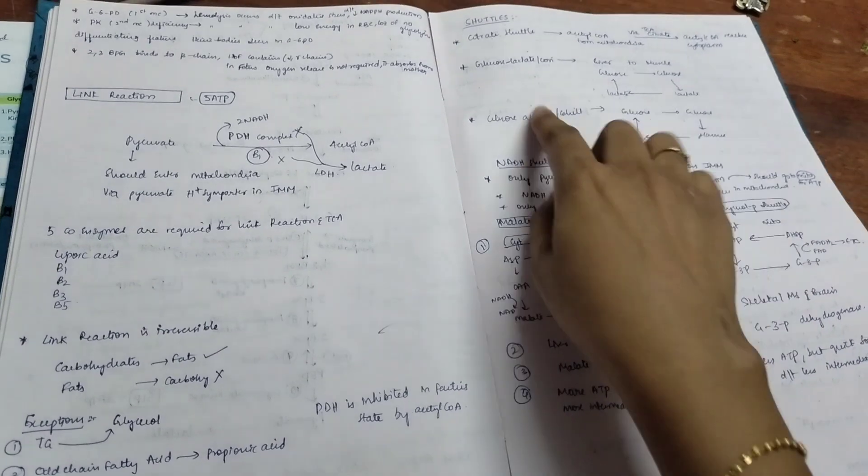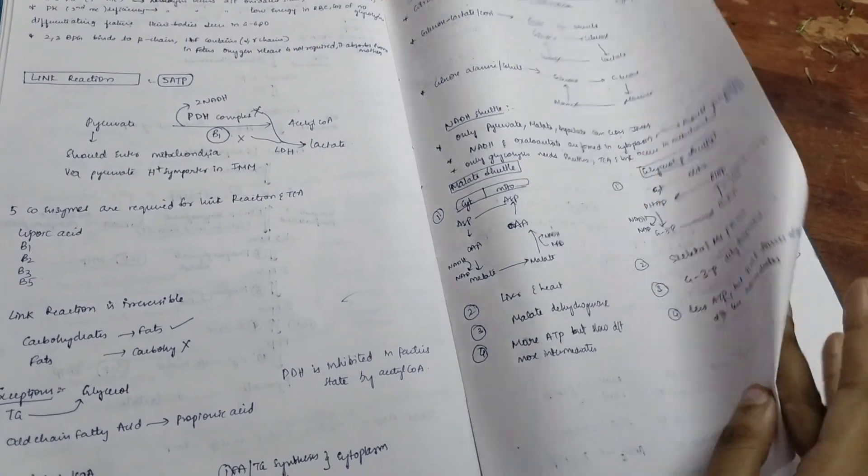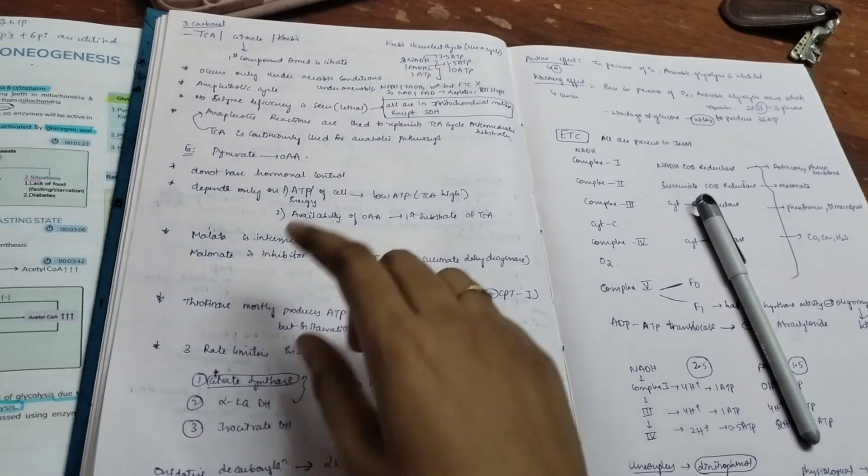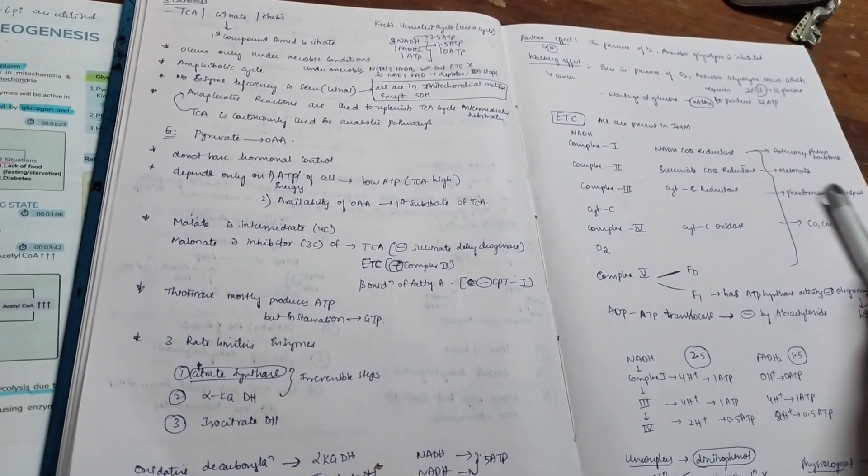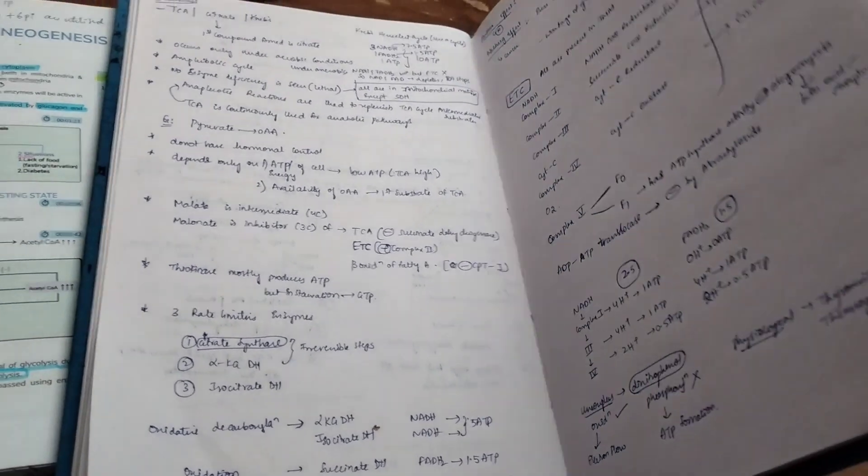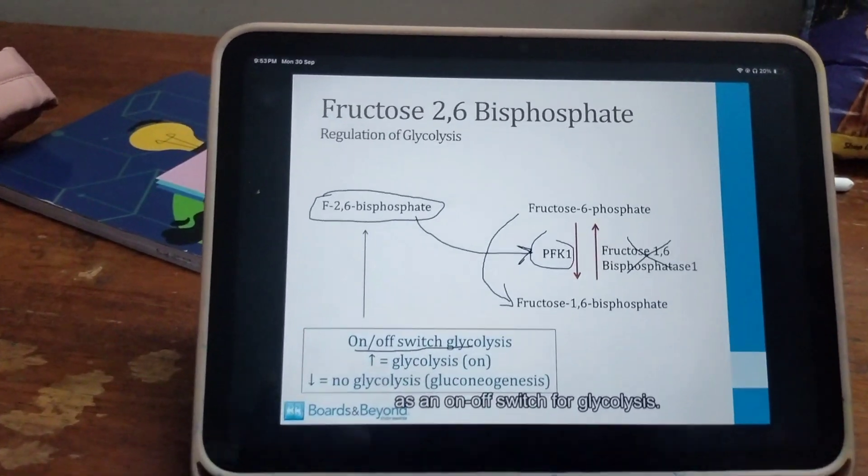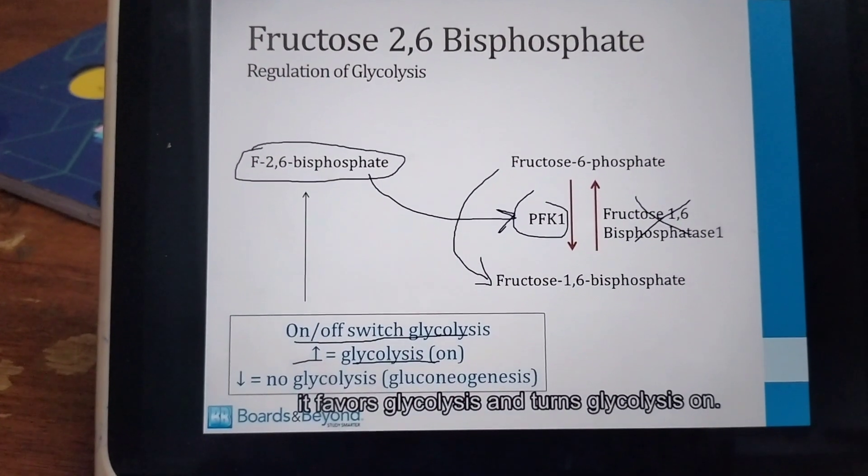This side, it is the shuttles—all shuttles together: malate-aspartate shuttle, glycerol phosphate, malate shuttles—and the TCA cycle in just one side and the ETC in one side. All together it takes about four pages, which is really worth your time because it will be easier for your revision. I have just listened to some concepts of biochemistry.